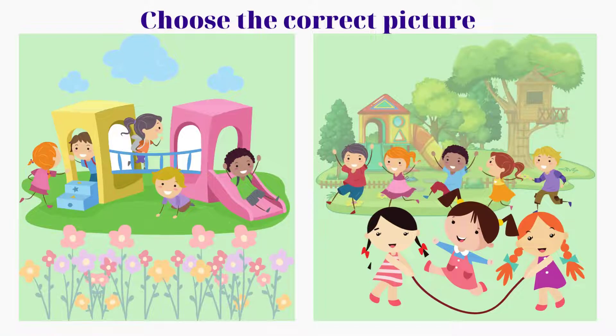Hello, can you see Anna? Yes, she is skipping now with her friends. Where are they? They are in the playground.